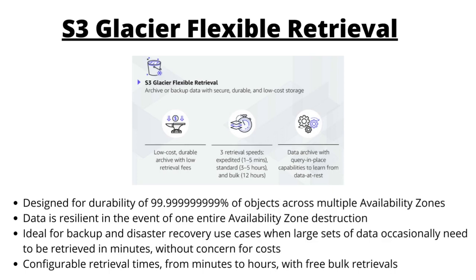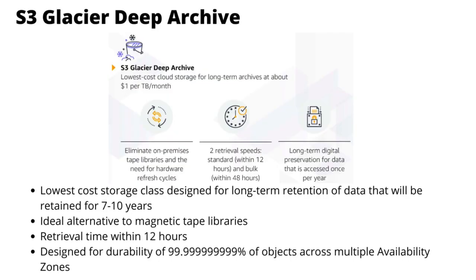S3 Glacier Flexible Retrieval is used for archival of data. The last type is S3 Glacier Deep Archive, which is the lowest cost storage designed for long term retention of data that you want to retain for seven to ten years. The retrieval time is about 12 hours, so if you retrieve your data you will get it within 12 hours. The durability is 99.999999999%, and it is an ideal alternative to magnetic tape libraries. It is the most cost effective storage class in S3.